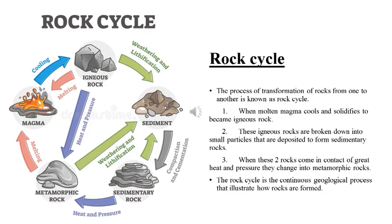Then when these two rocks come into contact with heat and pressure, they change into metamorphic rocks. You can see how both rocks are changing into metamorphic rock. The rock cycle is the continuous geological process that illustrates how rocks are formed.